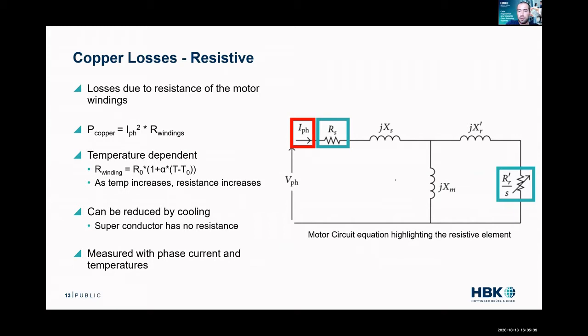So on the screen I have a really basic circuit model of, in this case, an induction machine. The reason I chose this is because a motor is a copper winding that copper has a resistance, and there's a phase current and that current's going through that resistance.